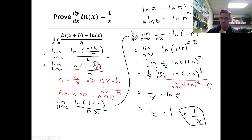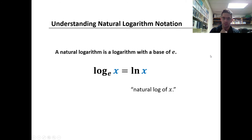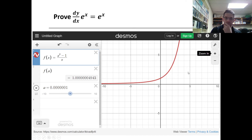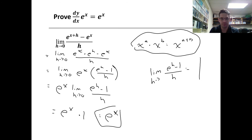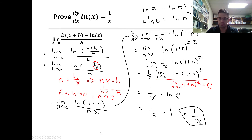That leaves us with 1 over x times the limit as n approaches zero of the natural log of 1 plus n to the power of 1 over n. This should look familiar — this is exactly the function Euler showed us: 1 plus x to the power of 1 over x, just with n instead of x. So we can replace this limit with e, giving us 1 over x times the natural log of e. Since the natural log of e equals 1, we're left with just 1 over x. The derivative of natural log of x is 1 over x.